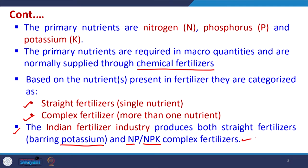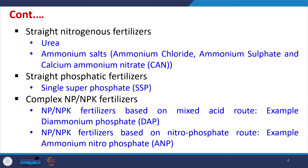We have industries producing both straight fertilizers and complex fertilizers. Straight nitrogenous fertilizers include urea and ammonium salts such as ammonium chloride, ammonium sulfate, and calcium ammonium nitrate — all of these are straight nitrogenous fertilizers.